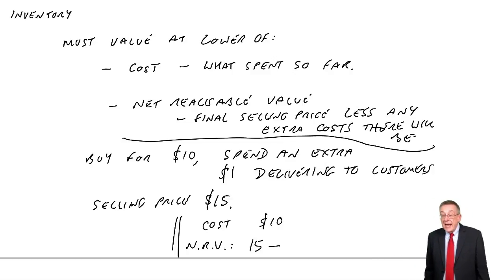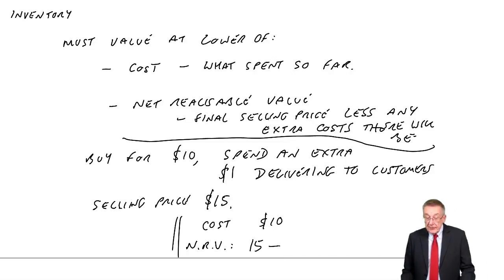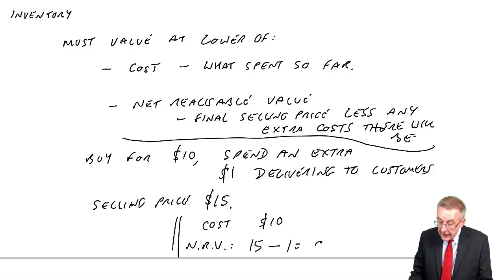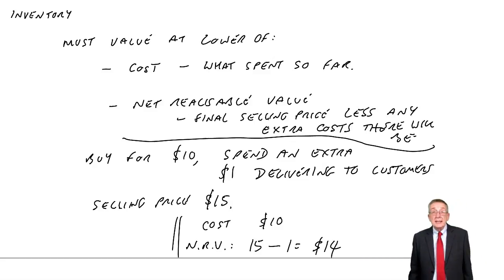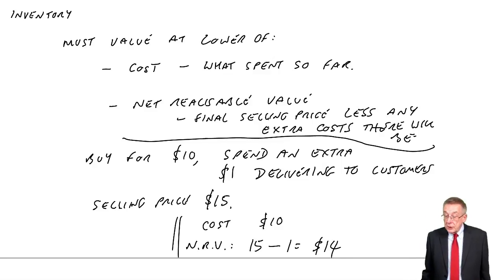less any future costs there are going to be before I sell them. Well, although I haven't spent it yet, I will have to spend an extra dollar when I come to deliver them. And so the net realizable value would be $14. And again, you value at the lower of the two, which in this case would be the $10.